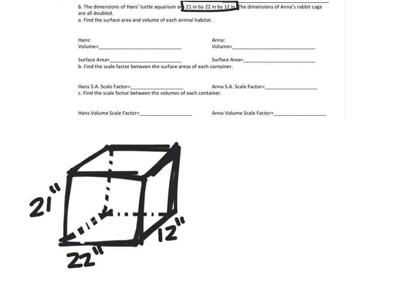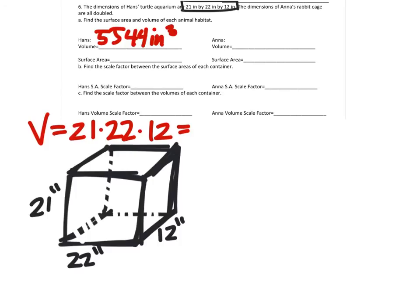To find the volume, that's not too bad. We just take all of these values and multiply them: twenty-one times twenty-two times twelve. This is a turtle aquarium. When we do that, we get 5,544 inches cubed.